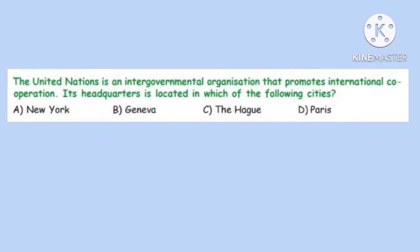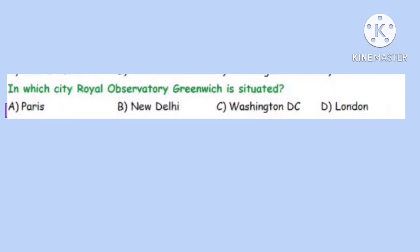Question 4. The United Nations is an inter-governmental organization that promotes international cooperation. Its headquarters is located in which of the following cities? Correct option is A: New York.